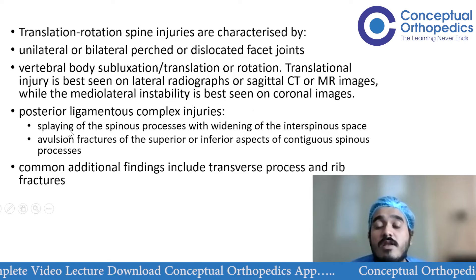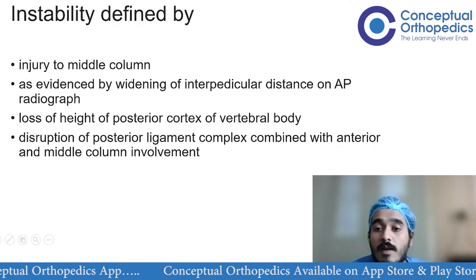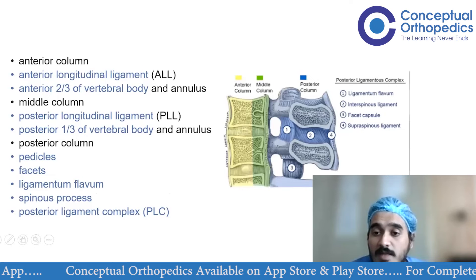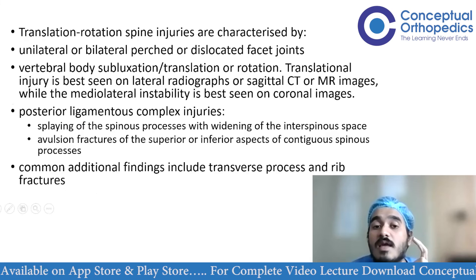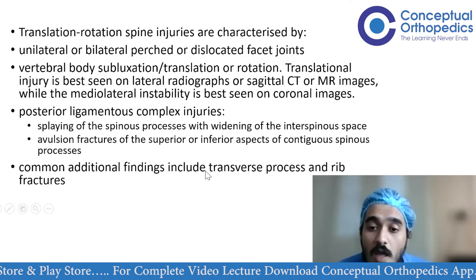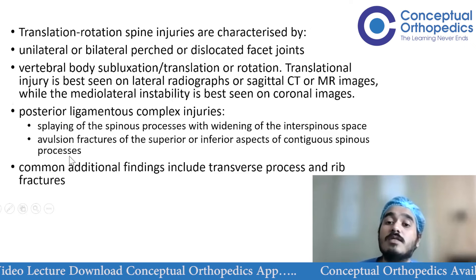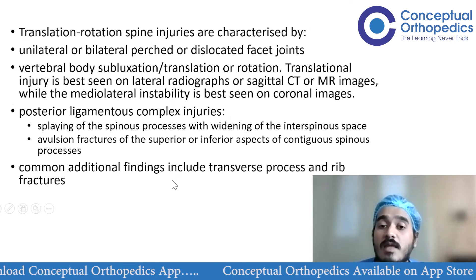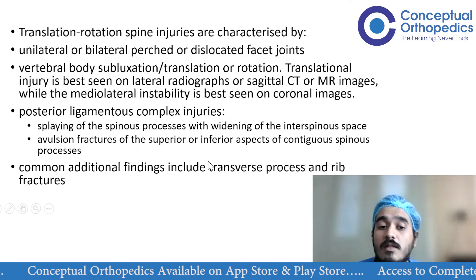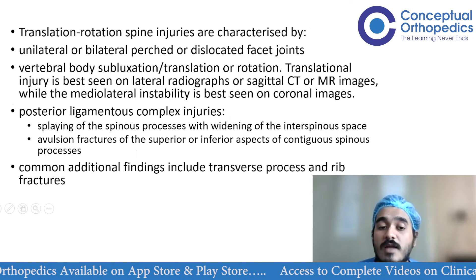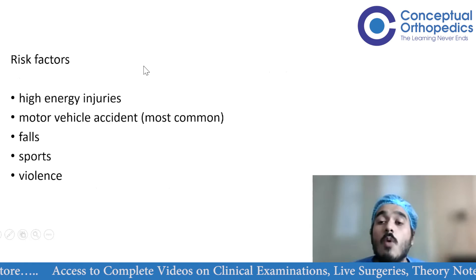Evidence of posterior ligamentous complex injury includes splaying of spinous processes and widening of the interspinous space, which appears suddenly increased compared to levels above and below the injury. Avulsion fractures of the superior and inferior aspects of contiguous spinous processes also indicate PLC injury. Additional findings include transverse process fractures and Chance fractures.